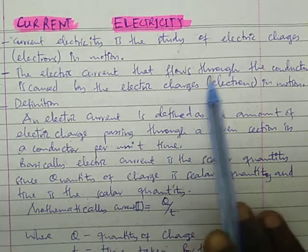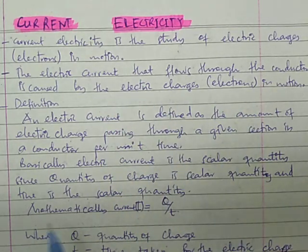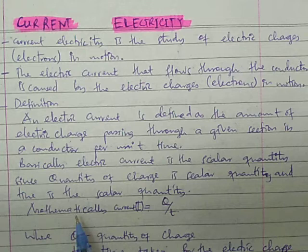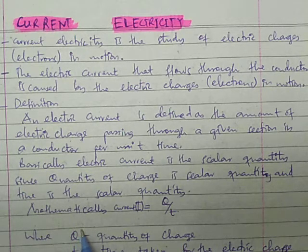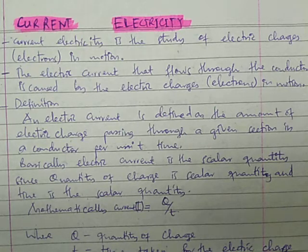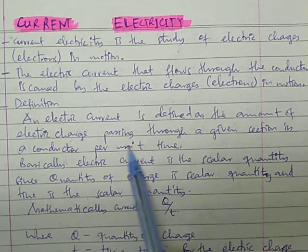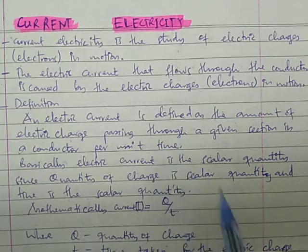The electric current that flows through the conductor is caused by electronic charge or electrons in motion. The electrons flowing through the conductor are the ones causing the current to flow. Simply, electric current is the flow of electrons. An electric current is defined as the amount of electric charge passing through a given section of a conductor per unit time.